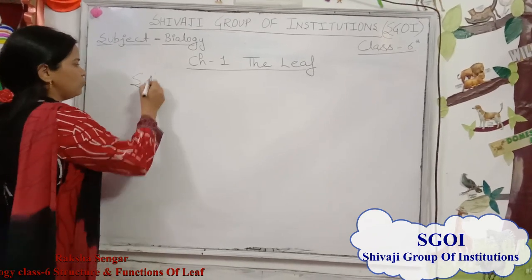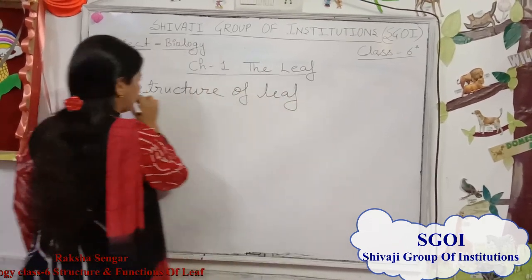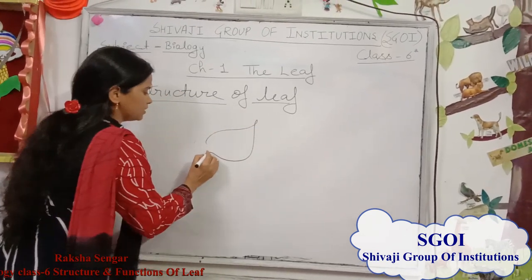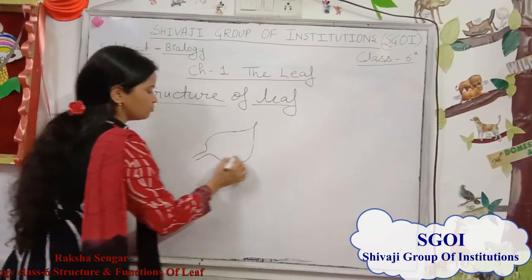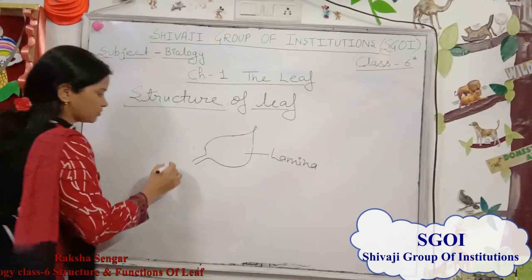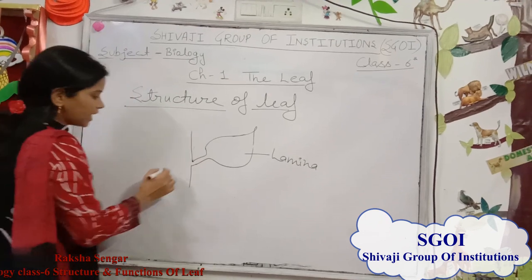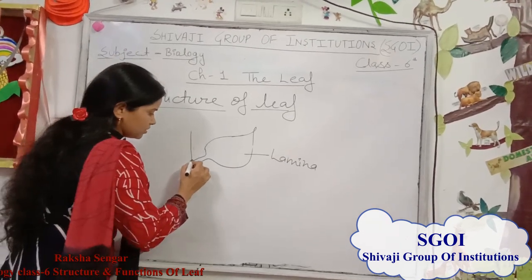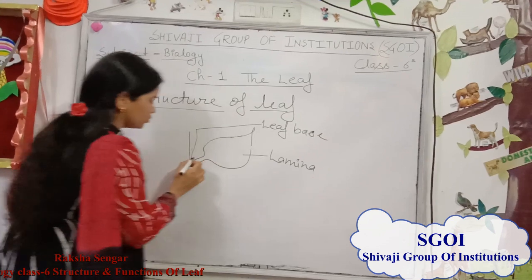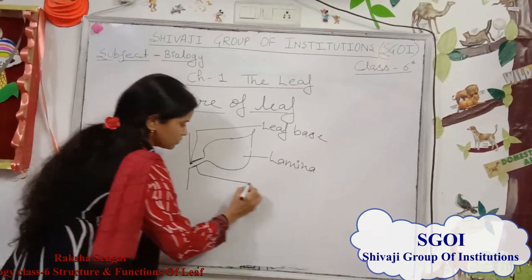Next is the structure of a leaf. A leaf is generally a flattened green structure. This flat portion of the leaf is called the lamina. It is attached to the branches or stem, and the portion where it attaches is called the leaf base, at the lower portion of its attachment.